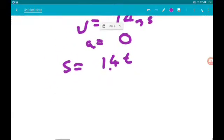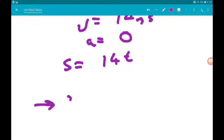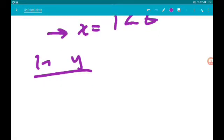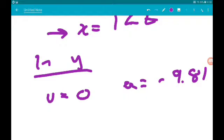Now in y, well, we know that the initial velocity u is 0. And we also know that acceleration is minus 9.81.